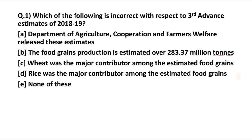The first question asks: which of the following is incorrect with respect to the third advanced estimates of 2018-19? I will also be telling you about the types of questions which could be framed from these estimates. The Department of Agriculture, Cooperation and Farmers Welfare released these estimates. It's important to note that this department comes under the Ministry of Agriculture and Farmers Welfare, and the data has been collected from feedback provided by state governments.